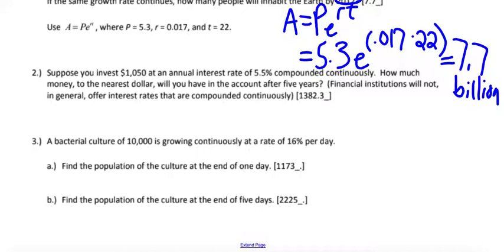So suppose you invest $1,050 at an annual interest rate of 5.5% compounded continuously. So again, there's your key word. If it's compounded continuously, this is going to be a PERT equation, not the other one.